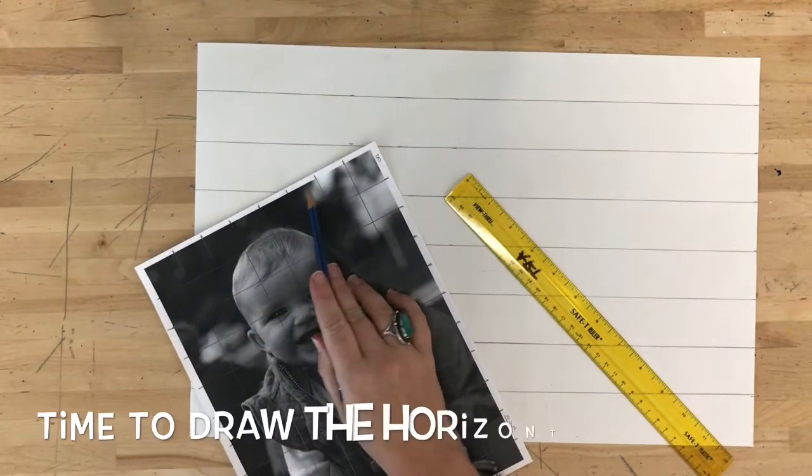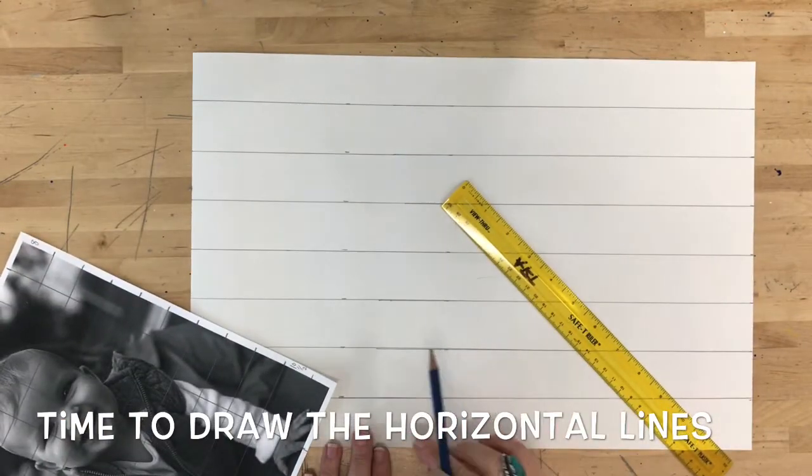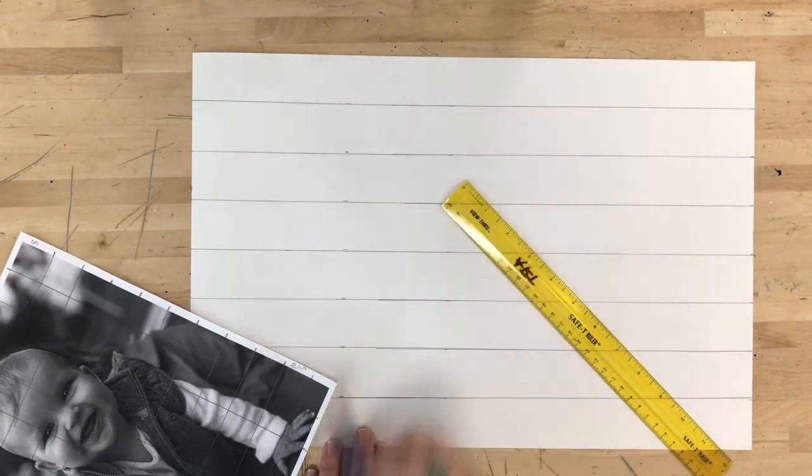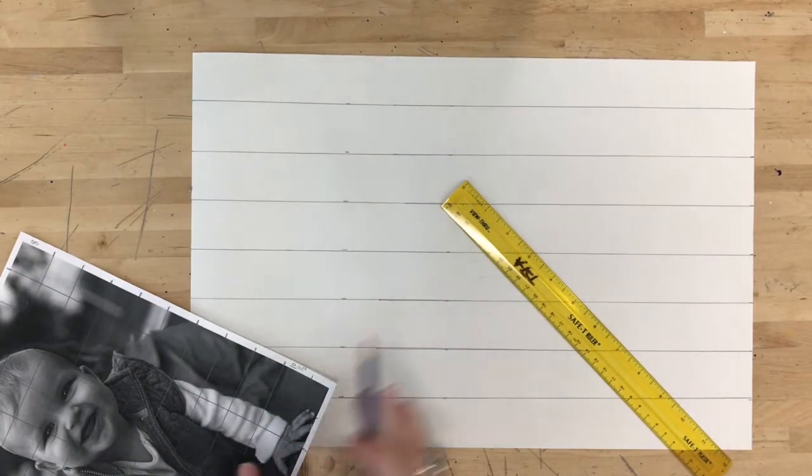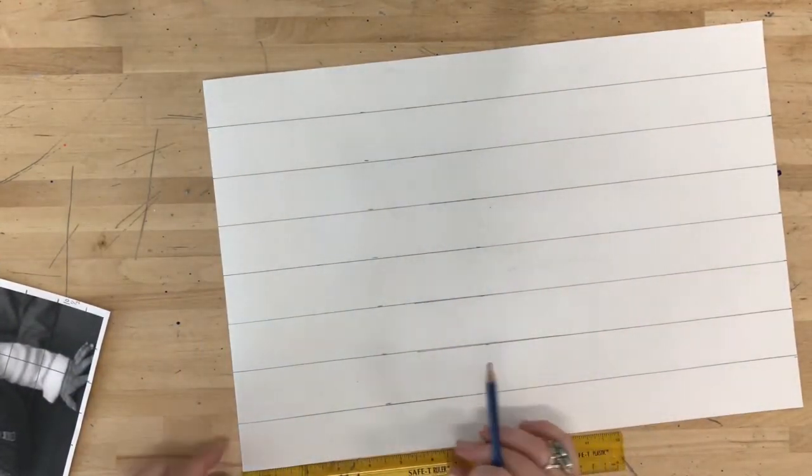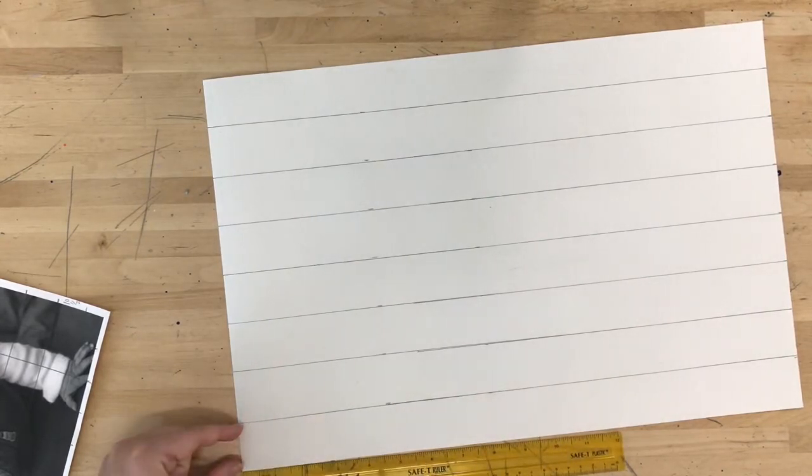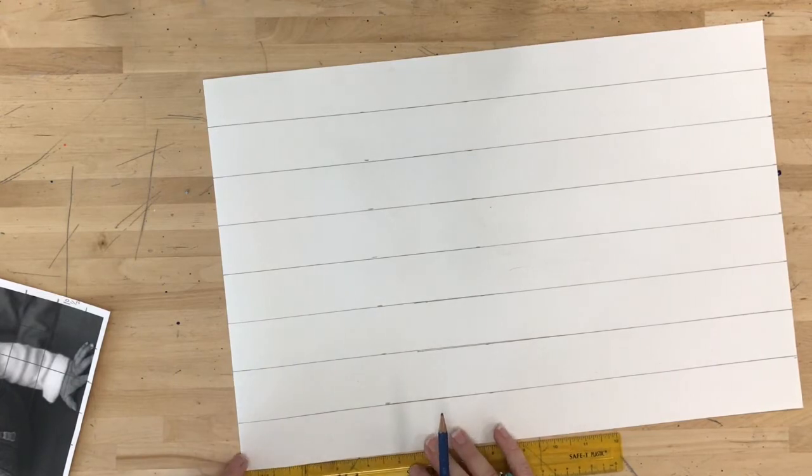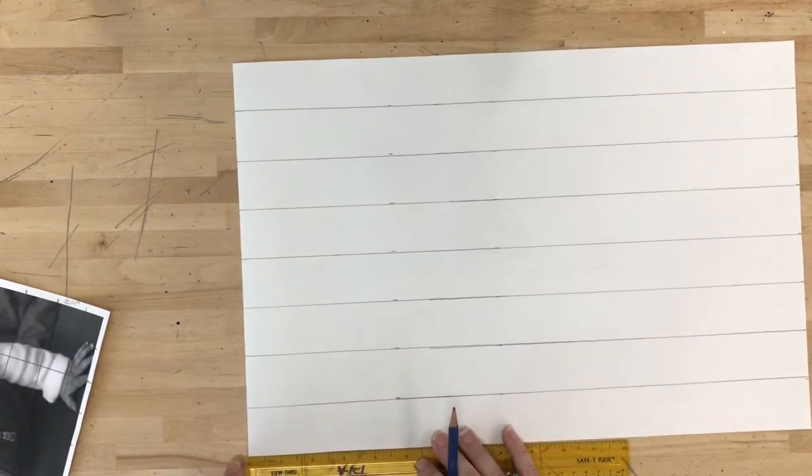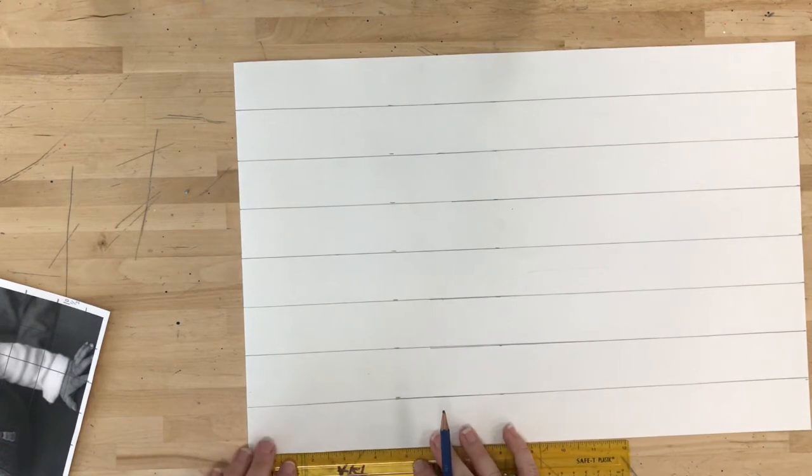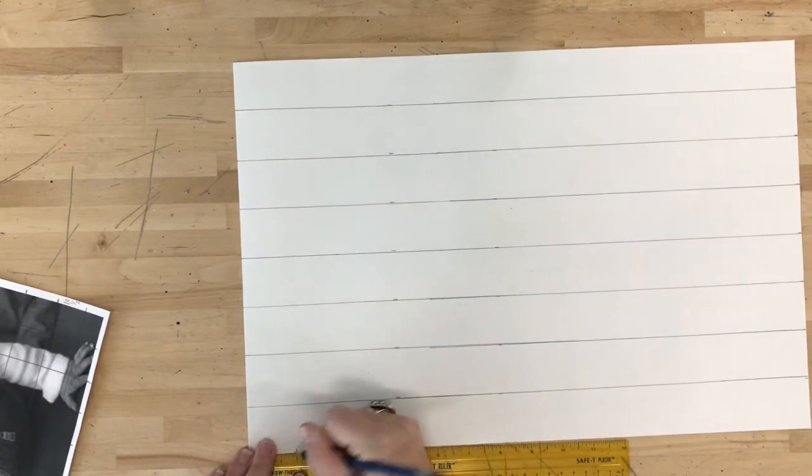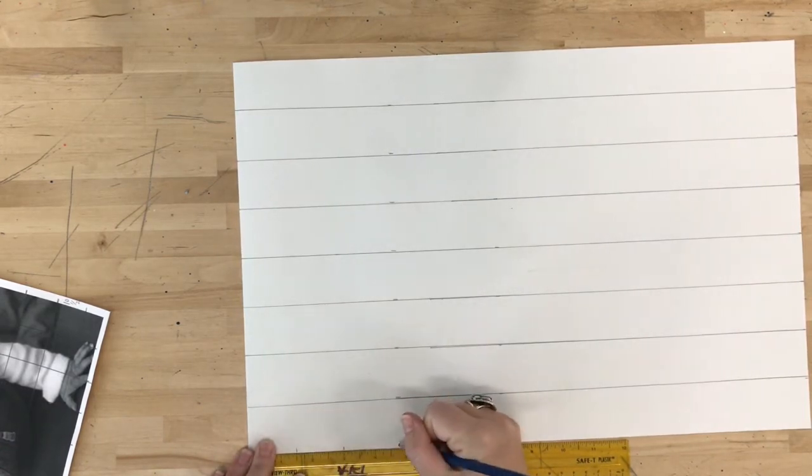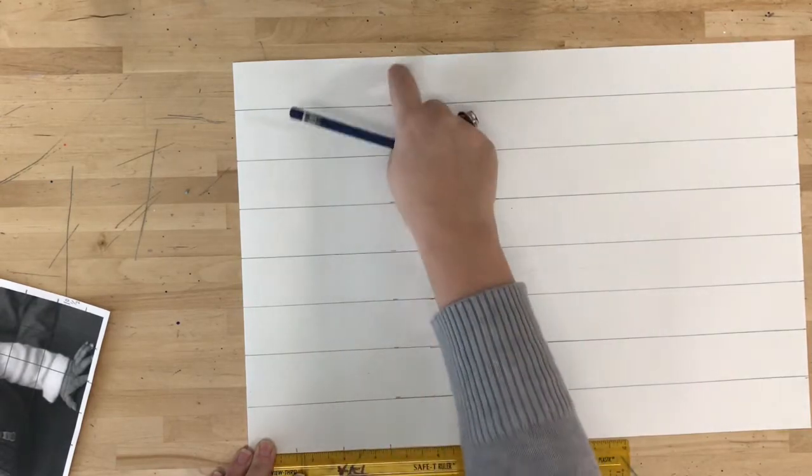So now I'm going to rotate my paper and remember I needed eight boxes across. This paper that I have is exactly enough for eight boxes across and I need ten boxes wide. And remember my boxes need to be the same height as they are width. They need to be square. So I did one and a half inches. So I'm going to line my ruler up the zero along the corner of my paper and I'm going to measure out every one and a half inch. I'm going to do this on both sides.